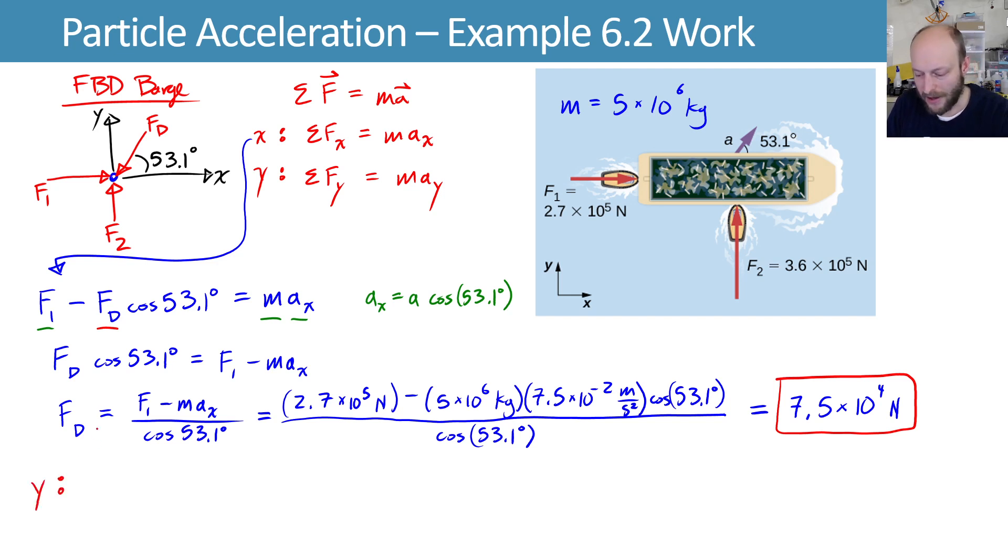And if we were to do that, the y equation would look something like this. When we look at this y equation, we have going upward f2, f1 doesn't appear. Going downward, we have some component of fd, our drag force, and it will be the sine of this angle, 53.1. And that will equal mass times acceleration in the y, which I can write as mass times acceleration times sine of 53.1 degrees.